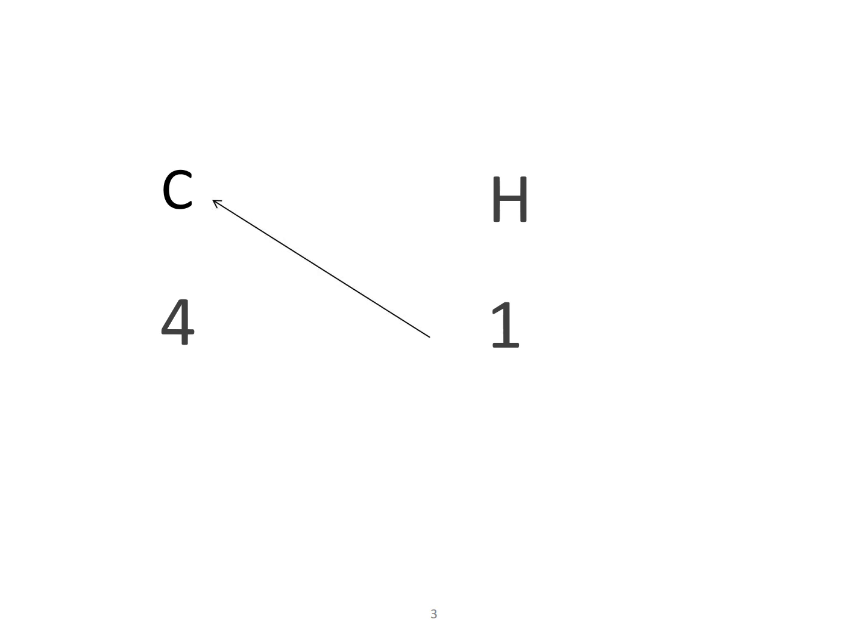After you have written the valency of these atoms, you will cross multiply. So carbon will be 1 and hydrogen will be 4. You write it as C1H4, or you can also write it as CH4. So CH4 becomes the molecular formula for the compound that is made up of carbon and hydrogen.